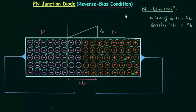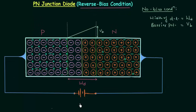Now we will move to the reverse bias condition. We will connect the negative terminal of the battery to the p-side and the positive terminal to the n-side. This is the reverse bias condition of the PN junction diode. Let's say the reverse bias potential is V_D. Because of connecting the negative terminal to the p-side and positive terminal to the n-side, there is an attraction between the holes on the p-side and the negative terminal, and between the electrons on the n-side and the positive terminal.